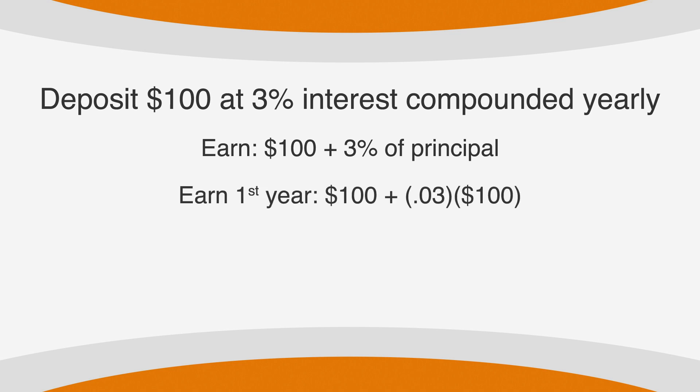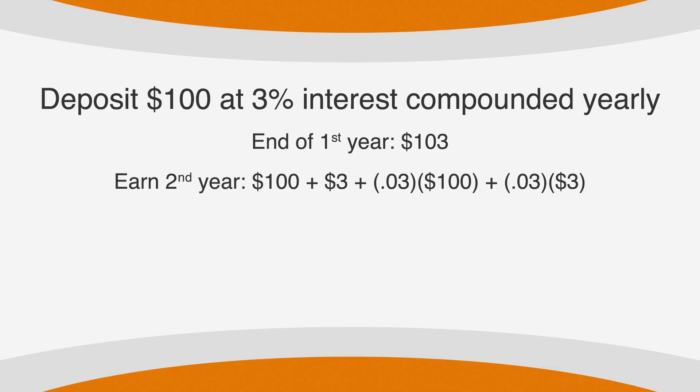We can write this equation as 100 plus .03 times 100. So you would earn $3 on the $100 you deposited. At the end of the first year, you would have $103. Now here's where the compound interest thing gets good. The second year, you would earn interest on the $100 you originally deposited, but you would also earn interest on the $3 interest you earned in the first year.